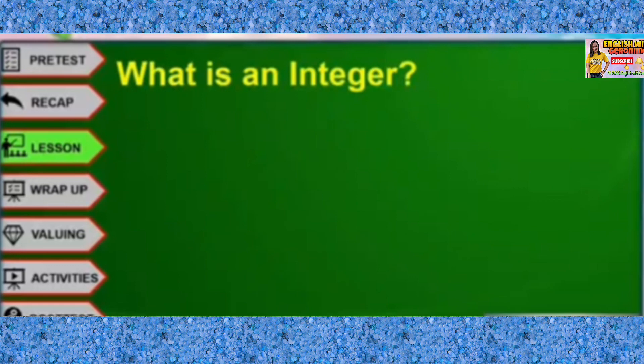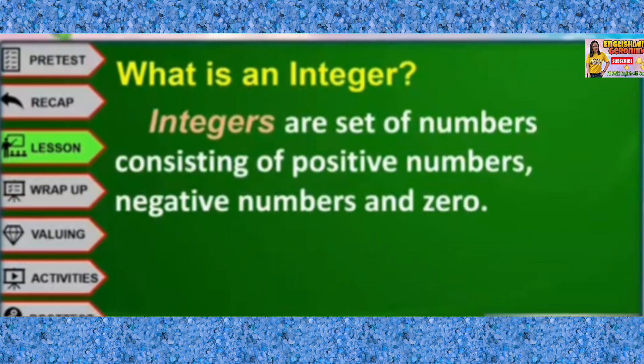So what is an integer? Integers are set of numbers consisting of positive numbers, negative numbers, and zero.